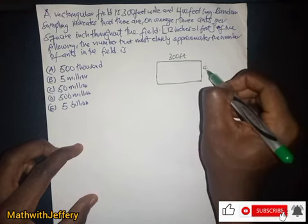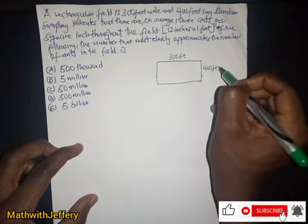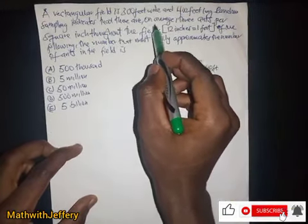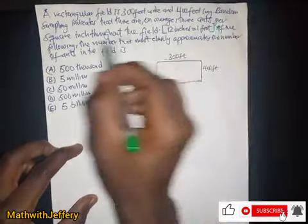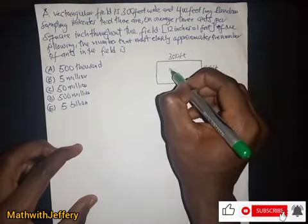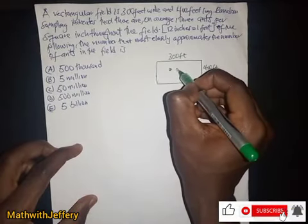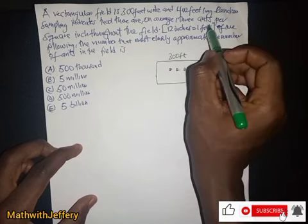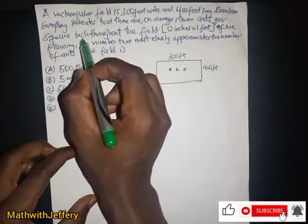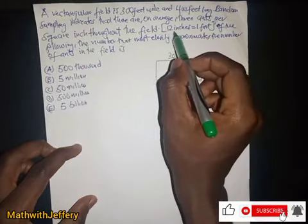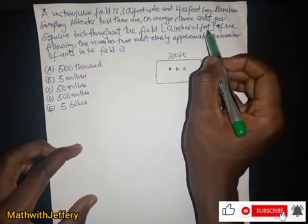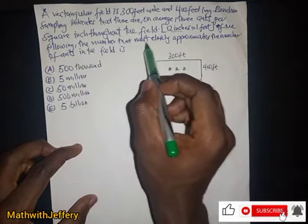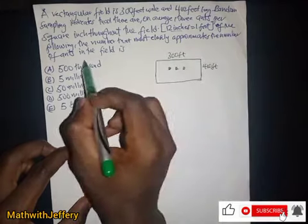Random sampling indicates that there are three ants per square inch throughout the field, where 12 inches equals one foot. We need to find the number that most closely approximates the number of ants in the field.